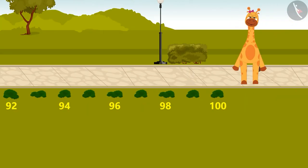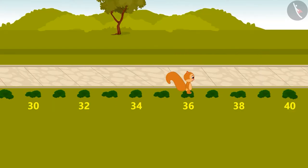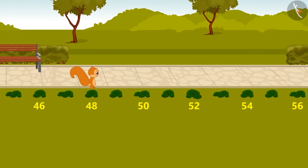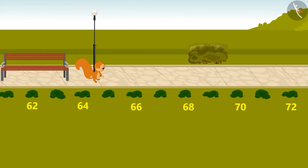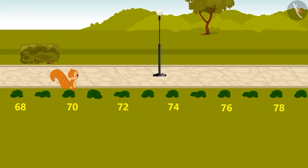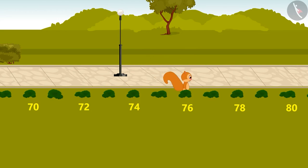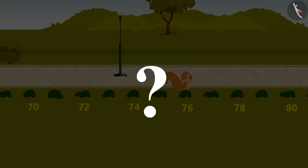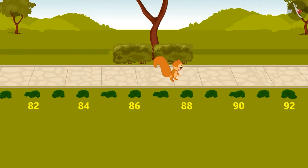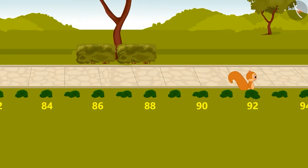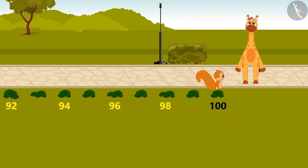Gaffee is waiting for her at bush number 100. Sunny continues to jump and she reaches bush number 76. Children, which bush number should Sunny jump to next? 78. Perfect answer. Sunny continued to jump and finally reached bush number 100.